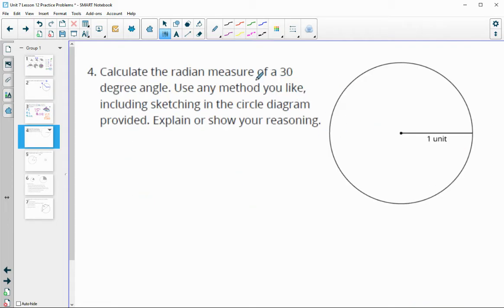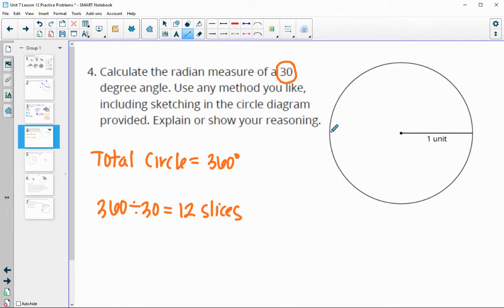Number 4, calculate the radian measure of a 30 degree angle. One thing I like to do when thinking about this is think about how many times I could fit a 30 degree chunk into the circle. The total circle equals 360 degrees. So 360 divided by 30 gives me 12 slices.